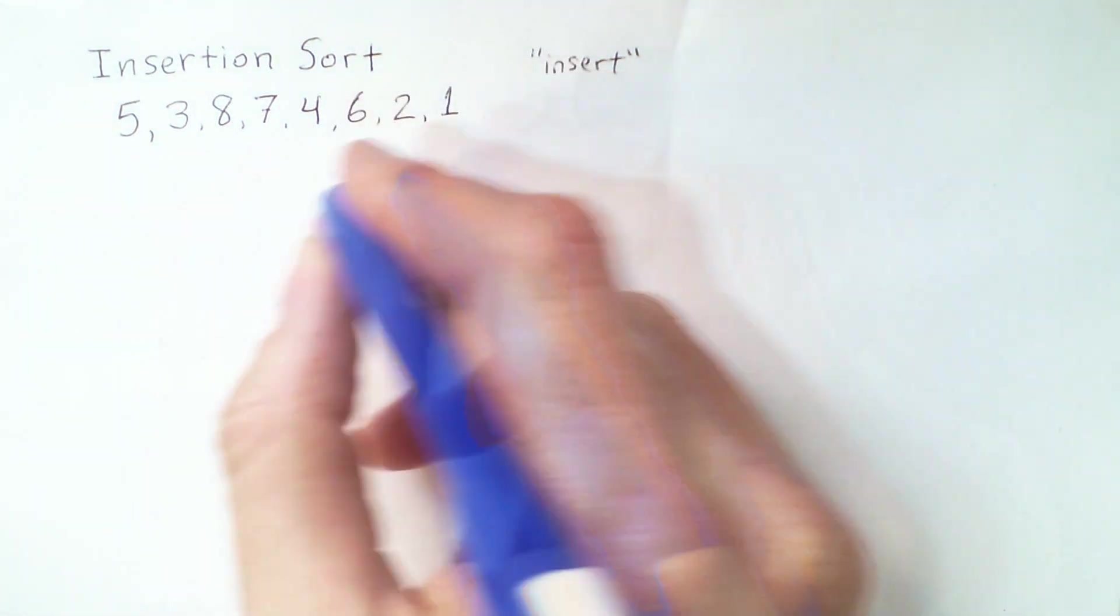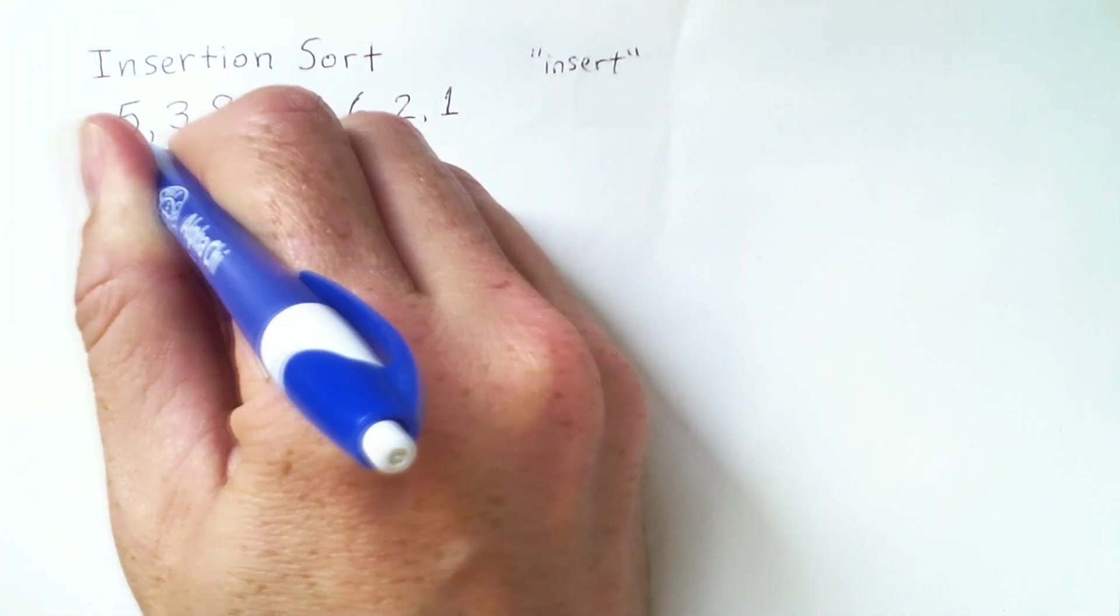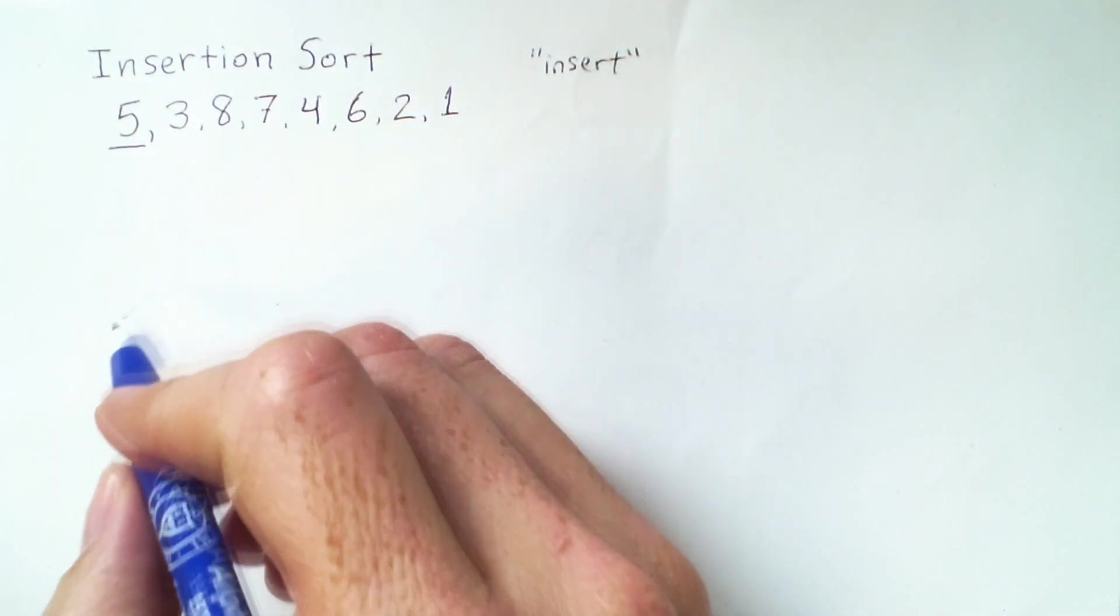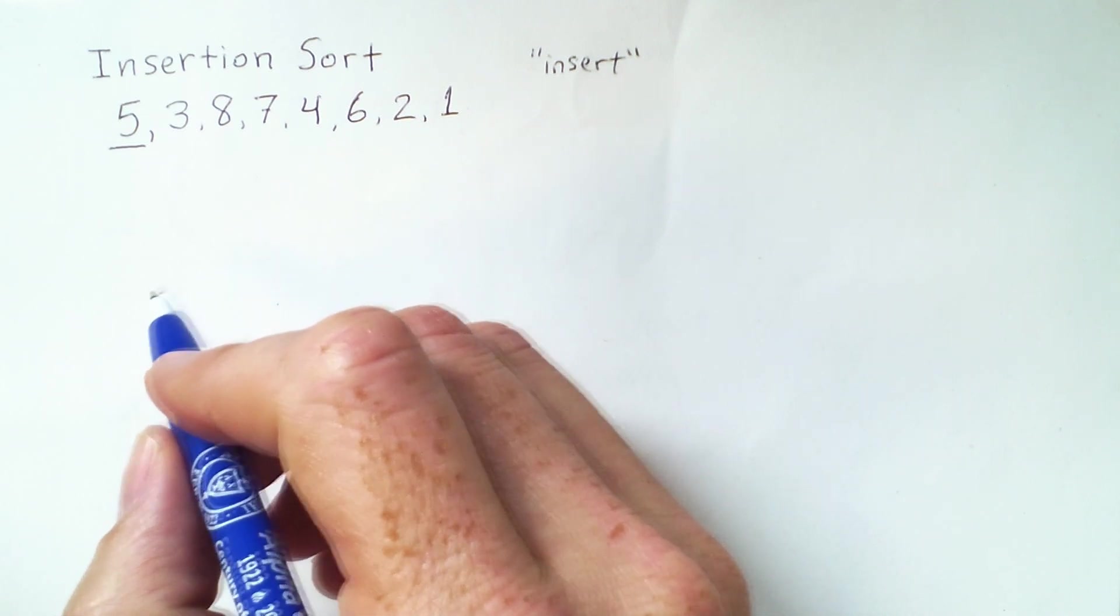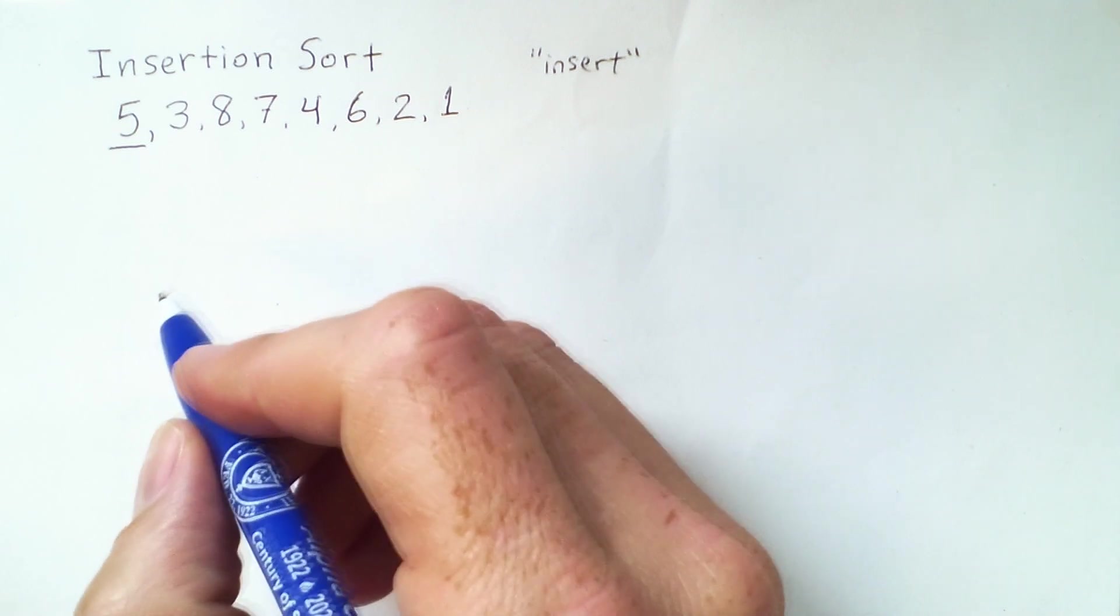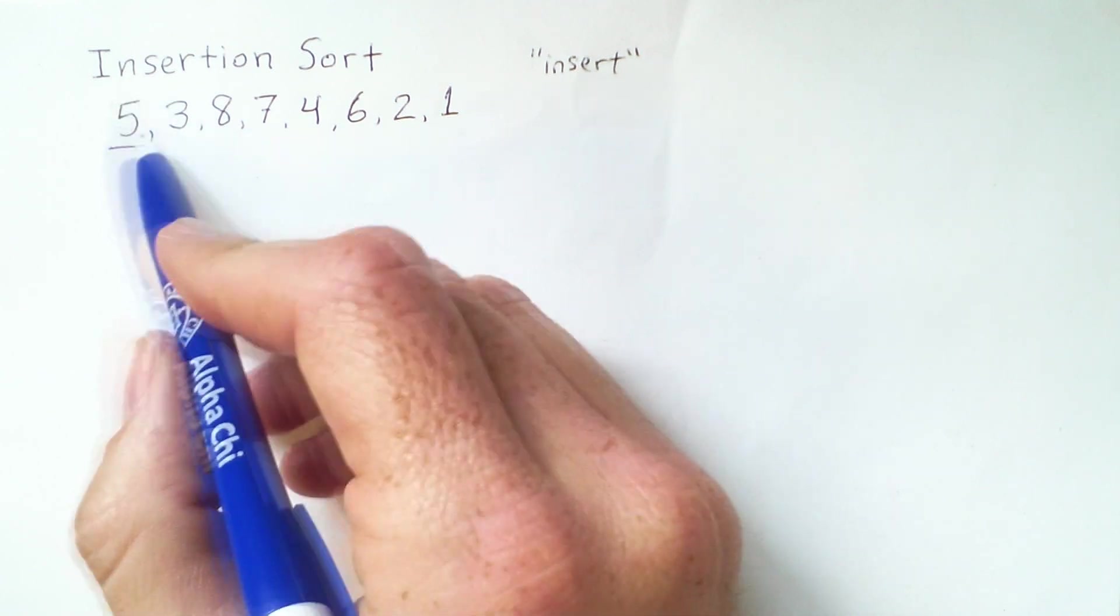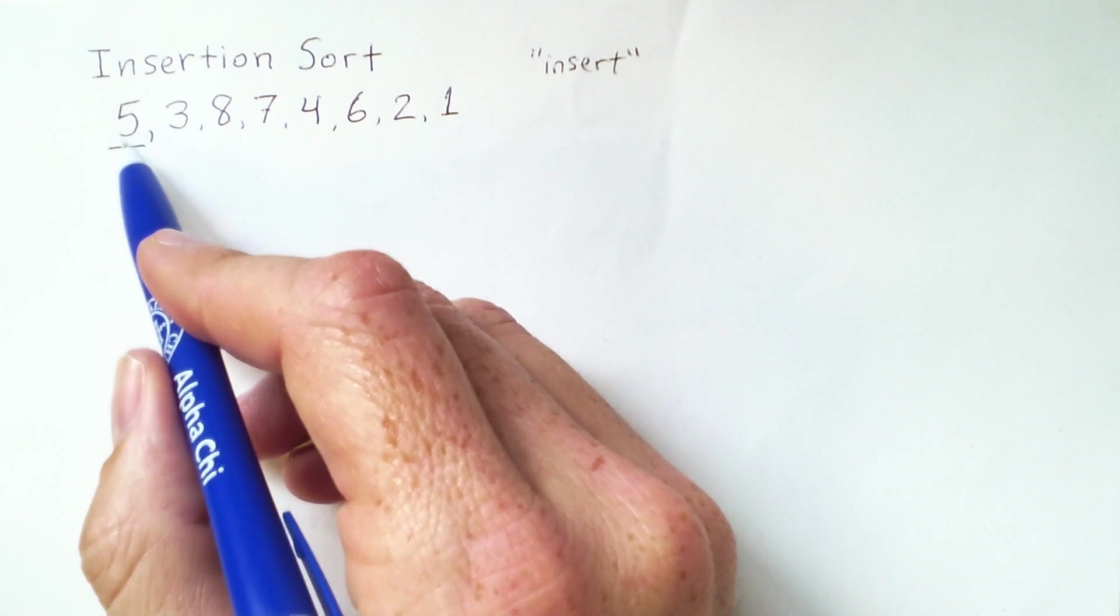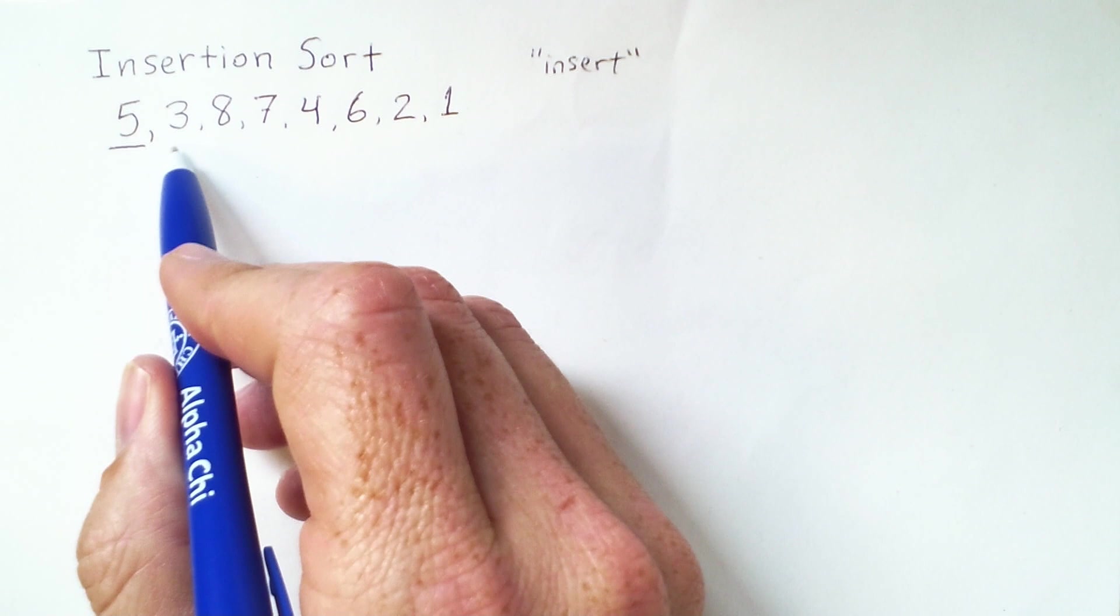So as we start, we're going to look at this first element, the 5, by itself. And if I'm only considering one element by itself, then that element is always sorted because there's nothing else to compare it to. So in a subarray of only one element, I have a sorted subarray. So this algorithm actually starts at the second element.